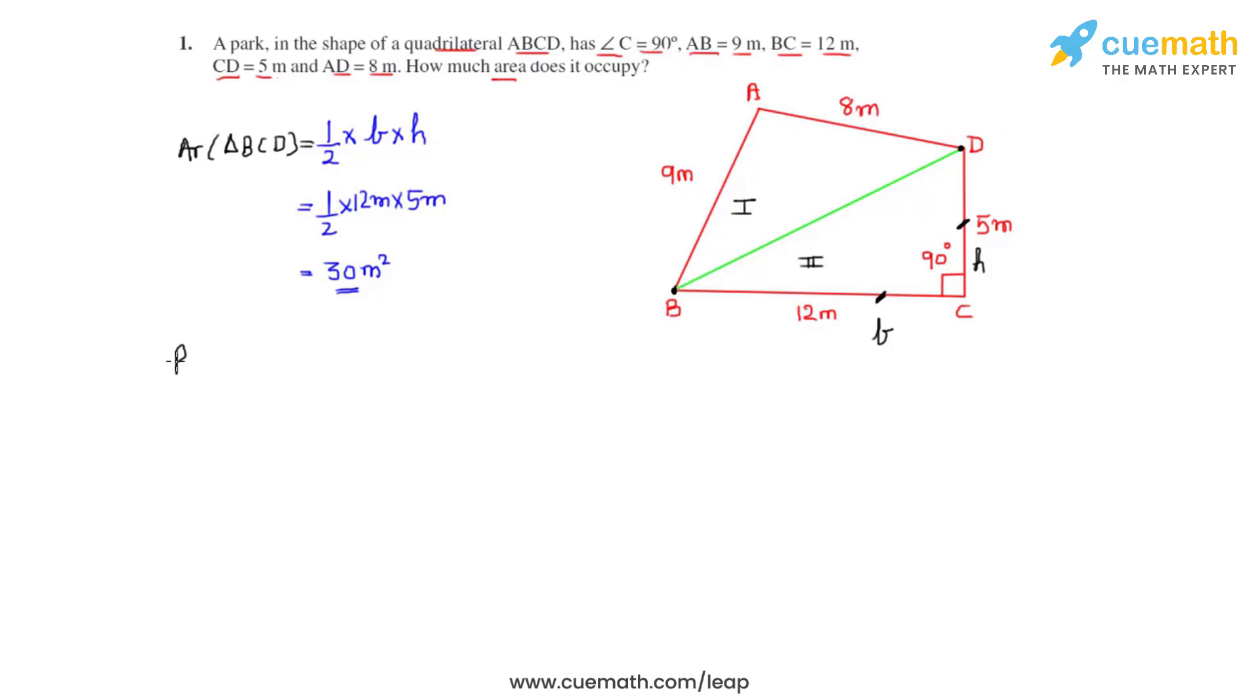And that can be found by making use of the Pythagorean theorem, which is to be applied to triangle BCD, which is right angled at C. So in application we write BD² equals BC² plus CD². So let's substitute those values and we get 12² plus 5². That comes as 144 plus 25.